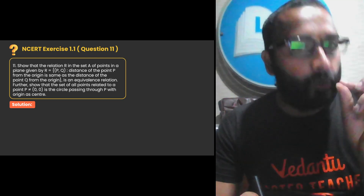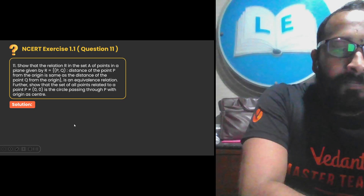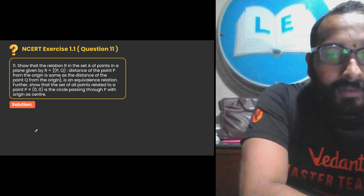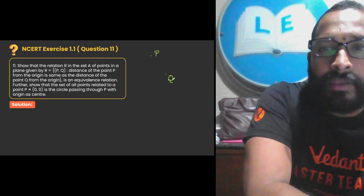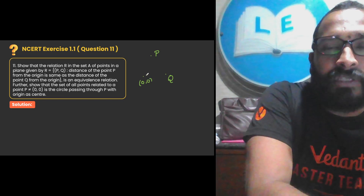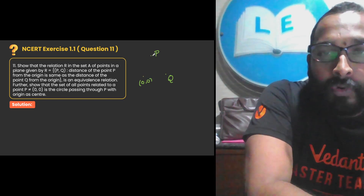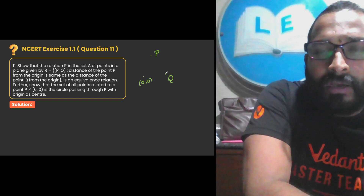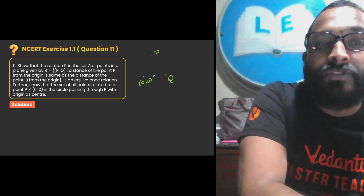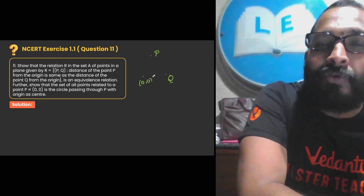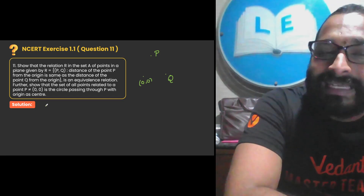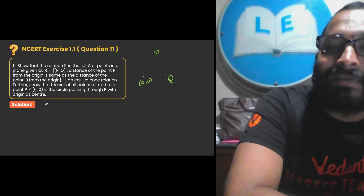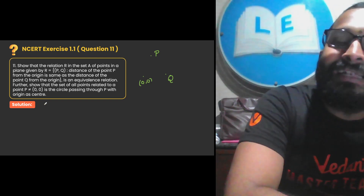So P and Q are the two points. Let us take this as point P and this as point Q. Taking this as the origin (0, 0), they are telling that the distance from the origin to P and the distance from the origin to Q is the same. They are asking us to prove it is an equivalence relation, and also that the set of all points related to a point P (not equal to 0) is a circle passing through P with center as the origin.